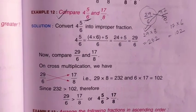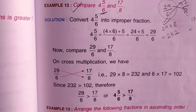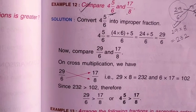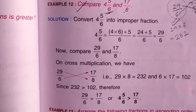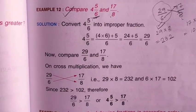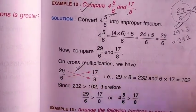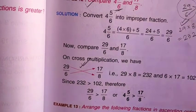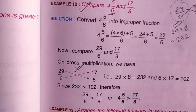So if the denominators are the same after converting to improper fractions, we simply check the numerator. If the denominators are different, we use the shortcut corner multiplication method, because converting to like fractions is a more time-consuming method.